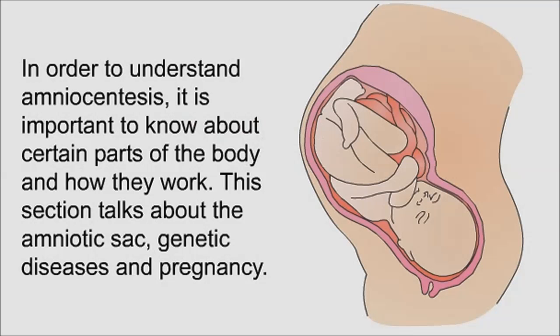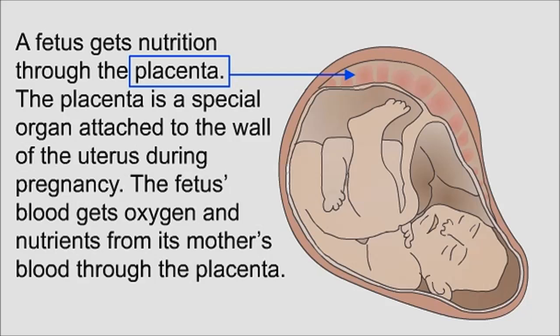In order to understand amniocentesis, it is important to know about certain parts of the body and how they work. This section talks about the amniotic sac, genetic diseases, and pregnancy. A fetus gets nutrition through the placenta, which is a special organ attached to the wall of the uterus.